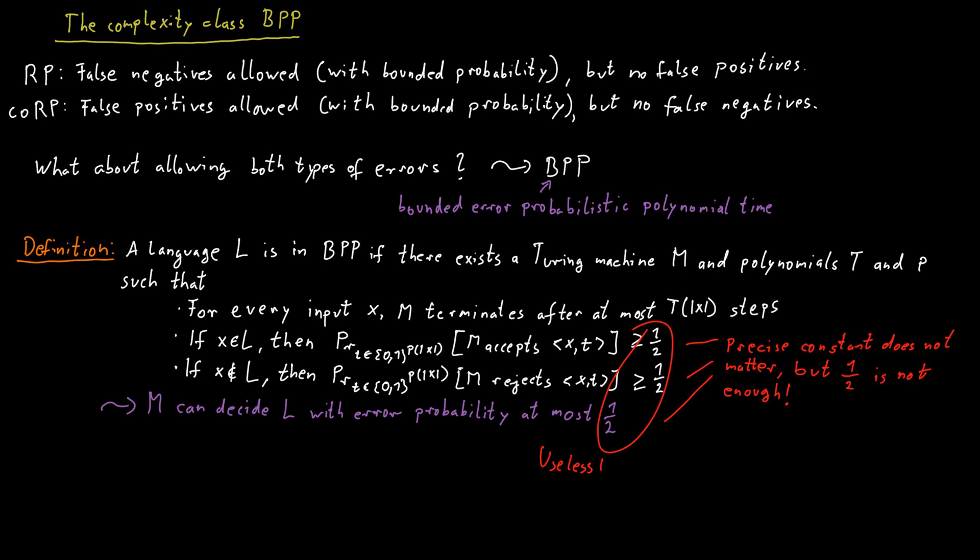I claim that this definition is useless, because you don't gain any information from a Turing machine that has this particular property. Here's an example of a Turing machine that satisfies all these conditions. The Turing machine will ignore its input.